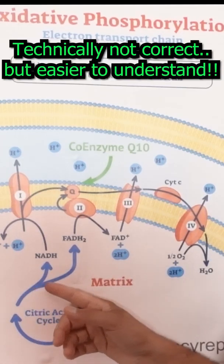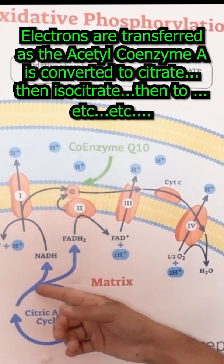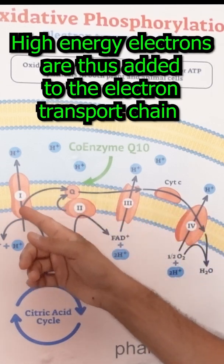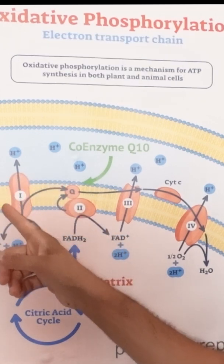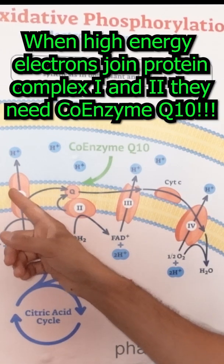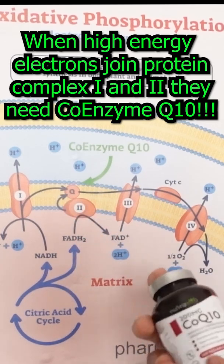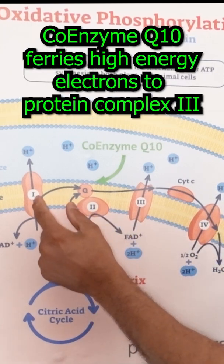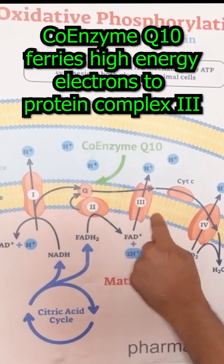The citric acid cycle strips the acetyl coenzyme A of high energy electrons, and these high energy electrons join the electron transport chain by joining protein complex one and protein complex two — proteins embedded in the inner membrane. When the high energy electrons join protein complex one and complex two, they need coenzyme Q10 to ferry the electrons from these two complexes to the third protein complex embedded in the inner membrane.